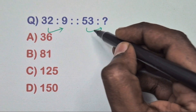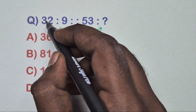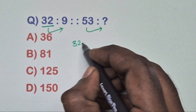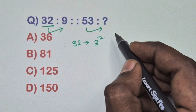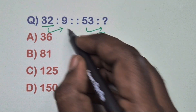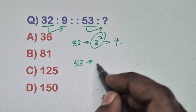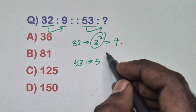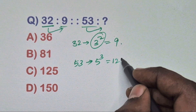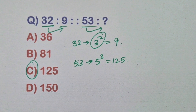Find the relation between this pair. Take 32: write 32 as 3 to the power 2, so 3 squared is 9. Same way, take 53: write it as 5 cubed, so 5 cubed is 125. Option C is the correct answer.